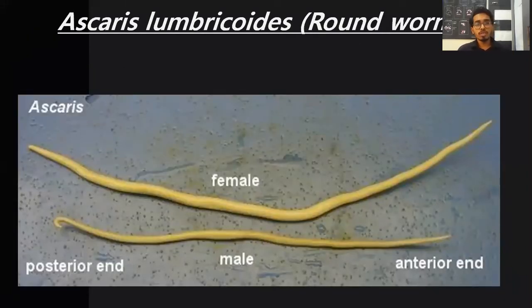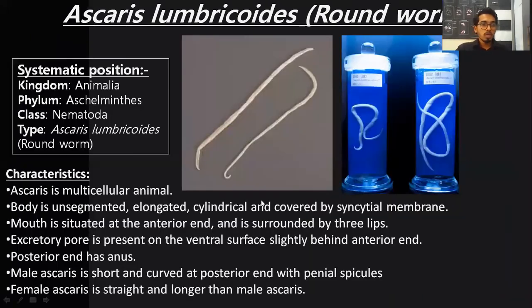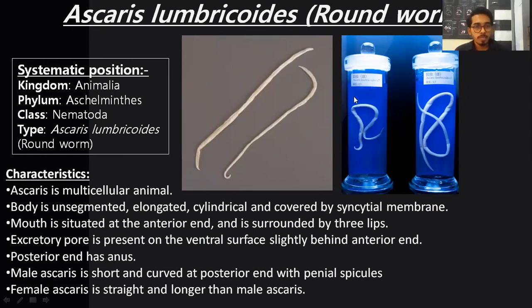The next specimen is Ascaris lumbricoides, also called roundworms because they are round in shape — very much tapering, pointed structures but with a round body. In examinations, the specimens will be kept for you in a specimen jar. Systematic position: it belongs to kingdom Animalia, phylum Nematoda, class Nematoda; the type specimen is Ascaris lumbricoides and the common name is roundworm.